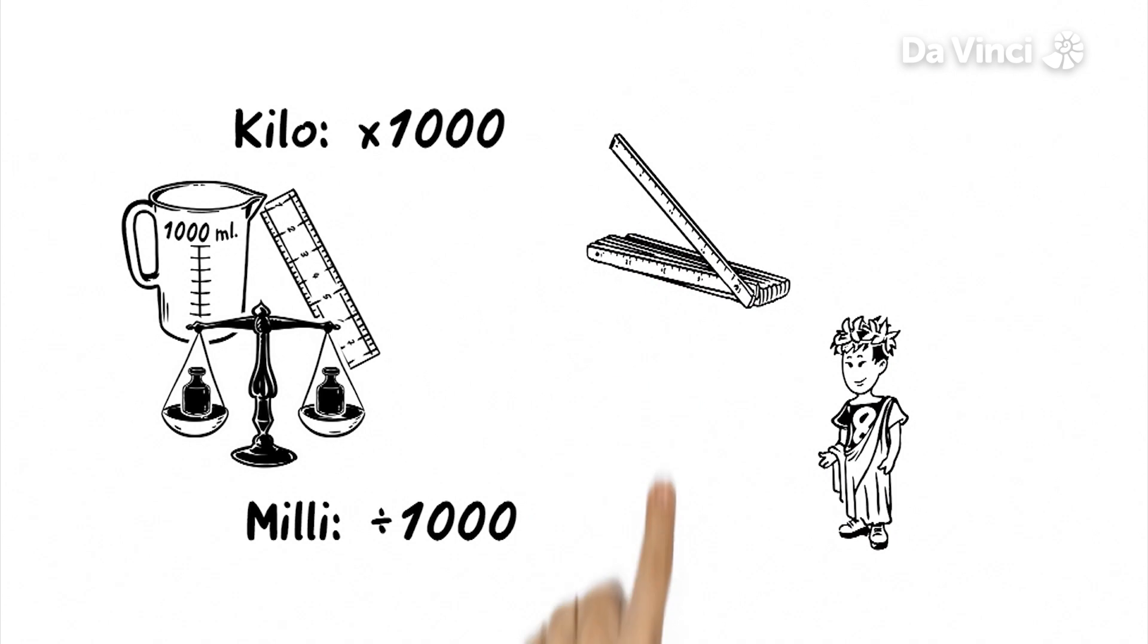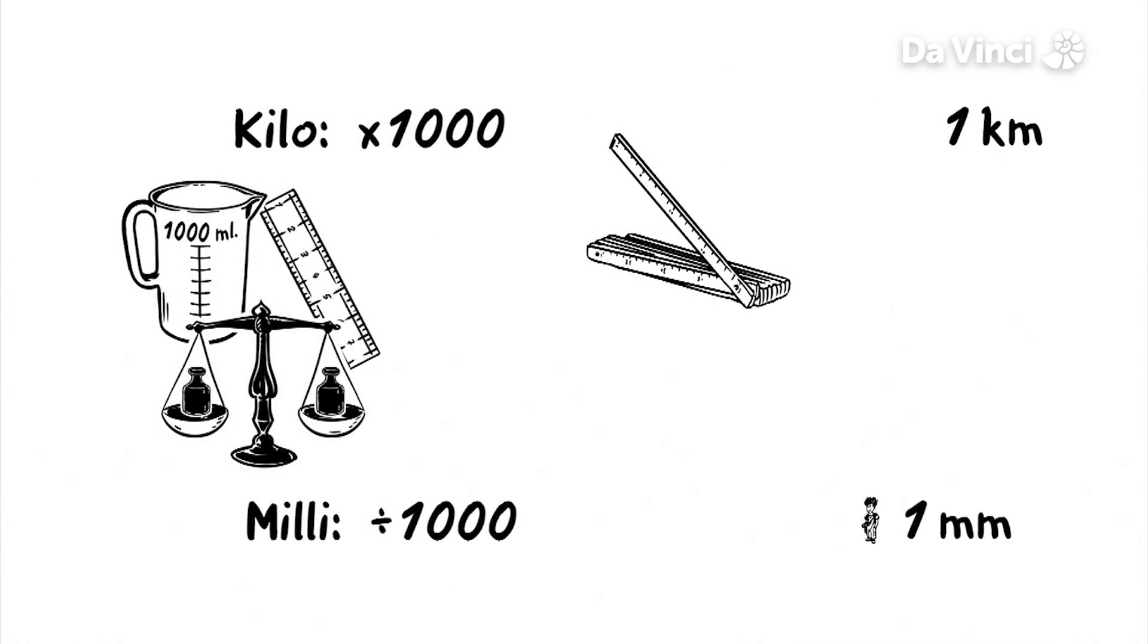So, a thousand meters is one kilometer and one meter divided by one thousand is one millimeter.